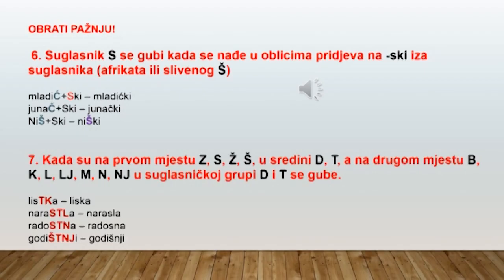Idemo dalje, džaci šestaci. Suglasnik S se gubi kada se nađe u oblicima pridjeva koji se završavaju na -ski iza suglasnika afrikata ili srivenog glasa Š. Tako su nastali pridjevi mladički, junački, niški. Kada su na prvom mjestu suglasnici Z, S, Ž i Š, a u sredini D i T,